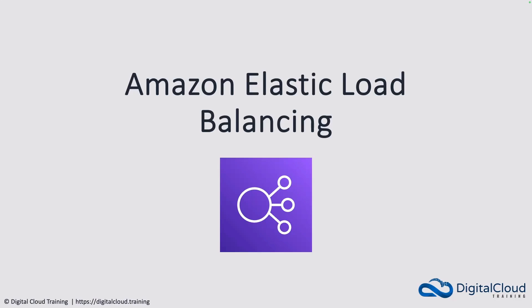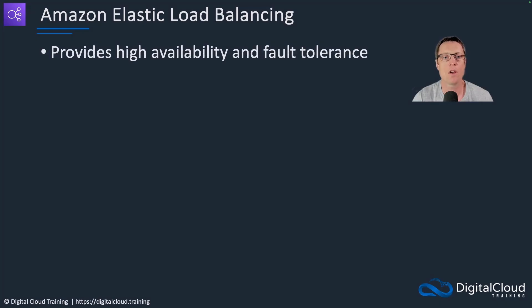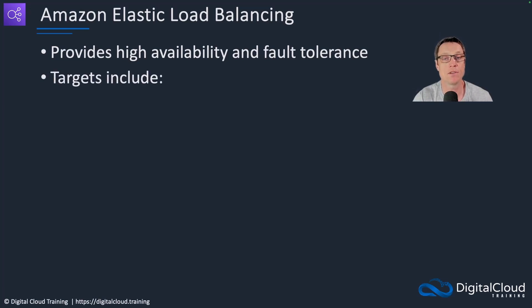In this lesson I'm going to cover Amazon Elastic Load Balancing. Load balancers provide high availability and fault tolerance. Essentially they're a single endpoint — a single DNS name or IP address — behind which a bunch of different instances sit. It's going to automatically distribute connections to those EC2 instances.